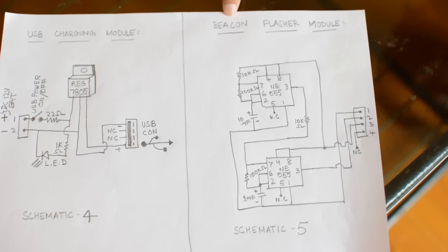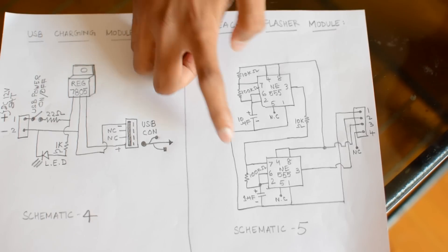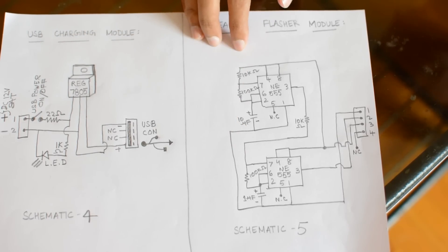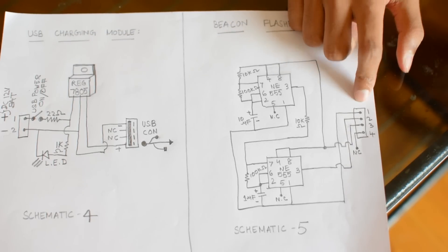This is the beacon flasher module schematic. You can see I have connected 2 ICs, any 555 ICs, and used them as astable multivibrators. One at high frequency and other at low frequency. Both these are connected with the help of a 4-pin connector and given to the module connector.